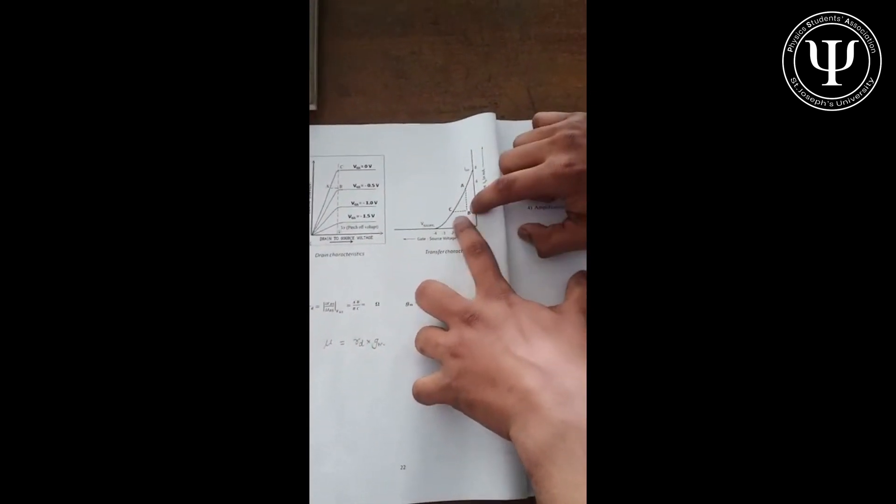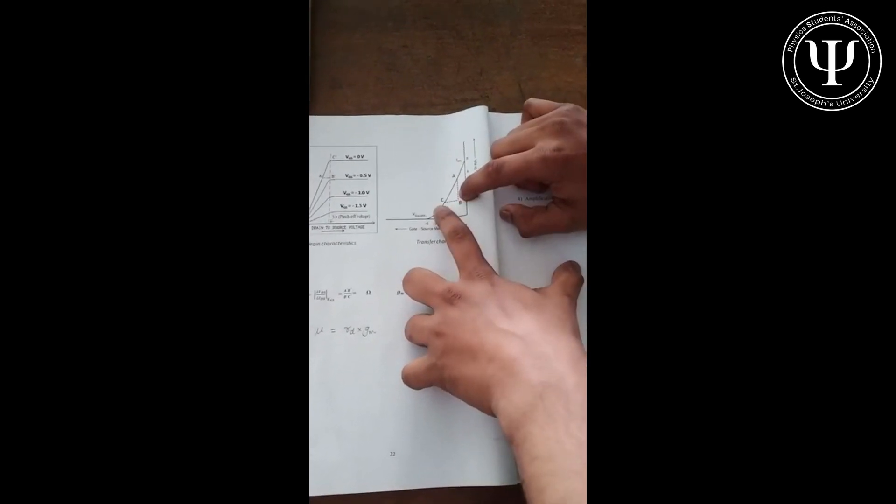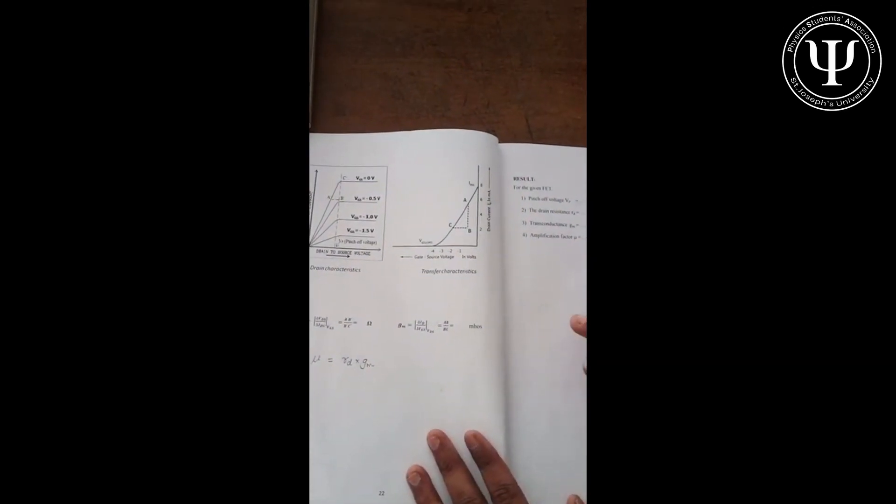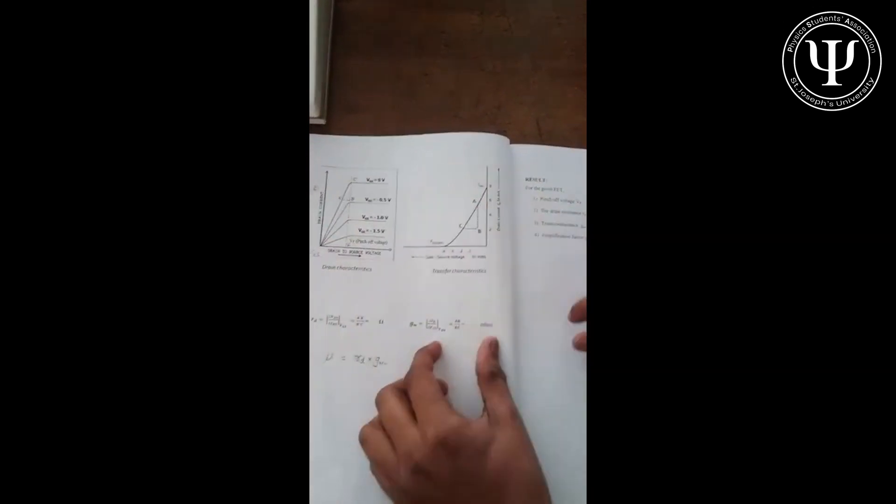Coming to the output characteristics curve, that is the transfer characteristics, we similarly just take the slope, that is ΔB by ΔC. Just take a random slope from the region that is straight, and you will get your transconductance value from that slope. And this is your transconductance.